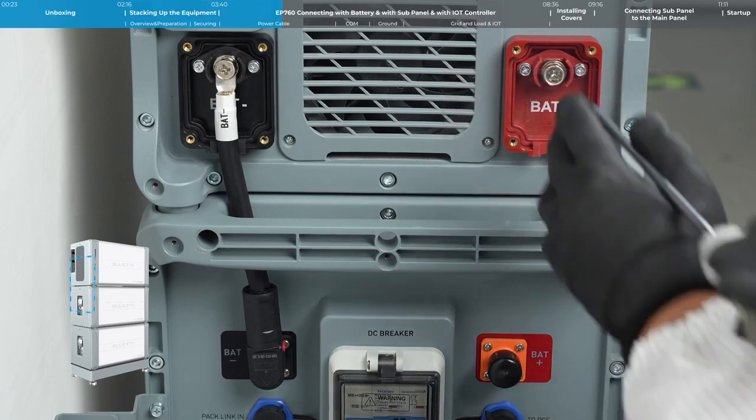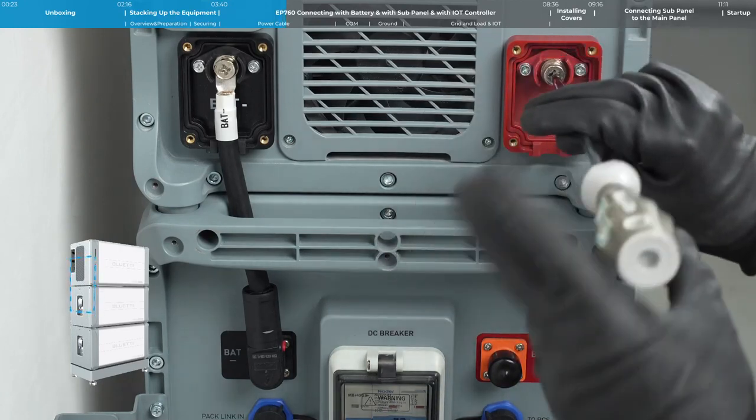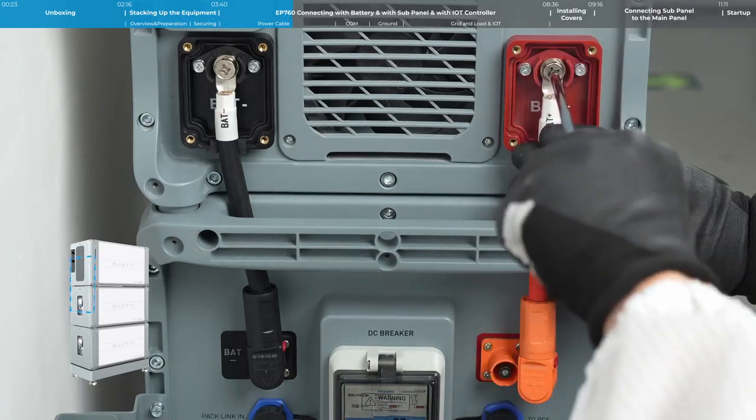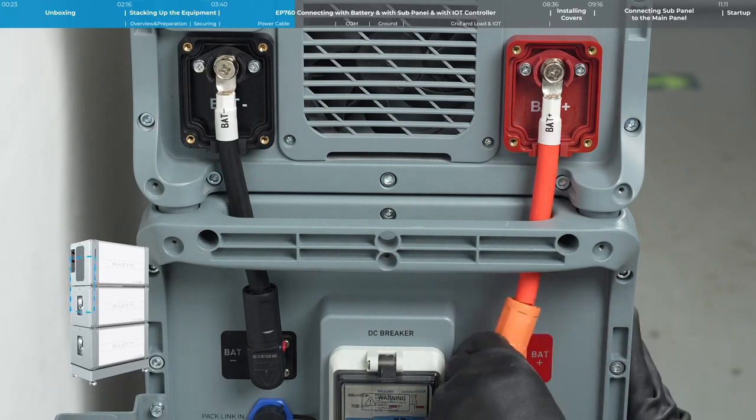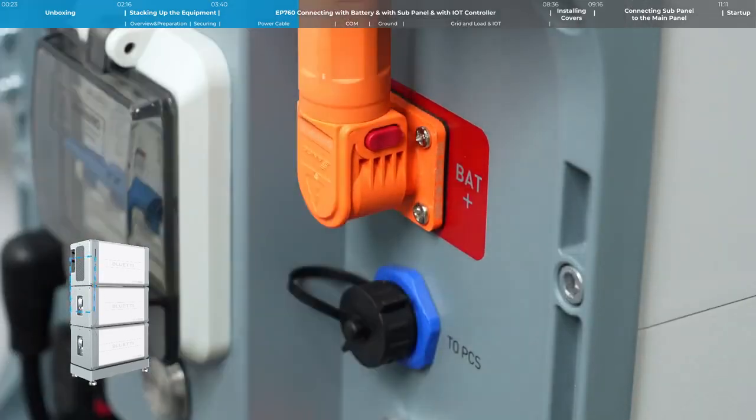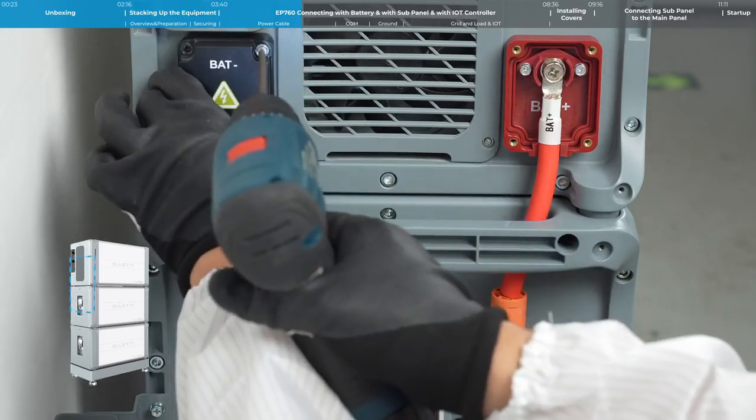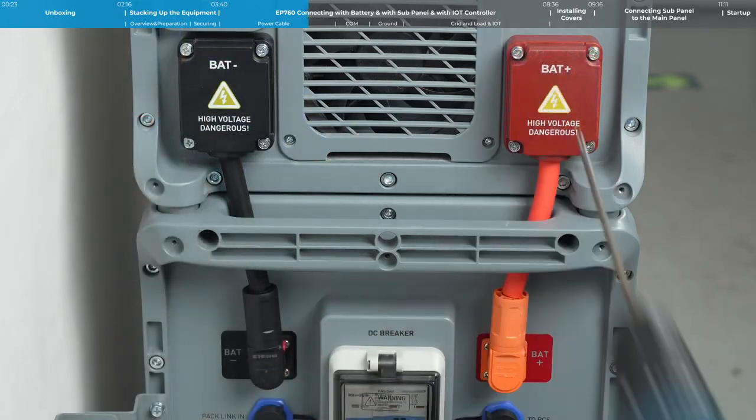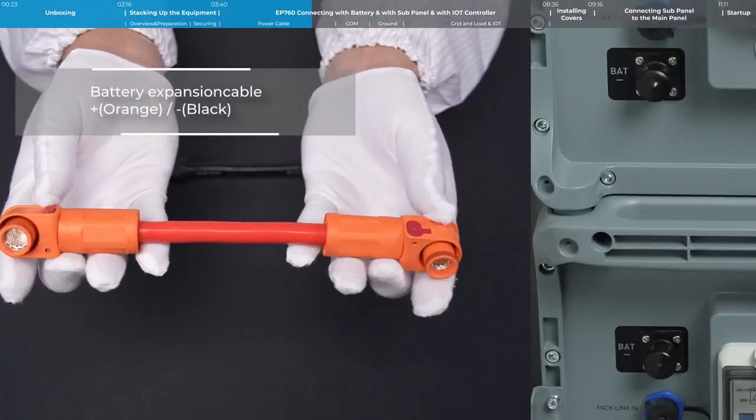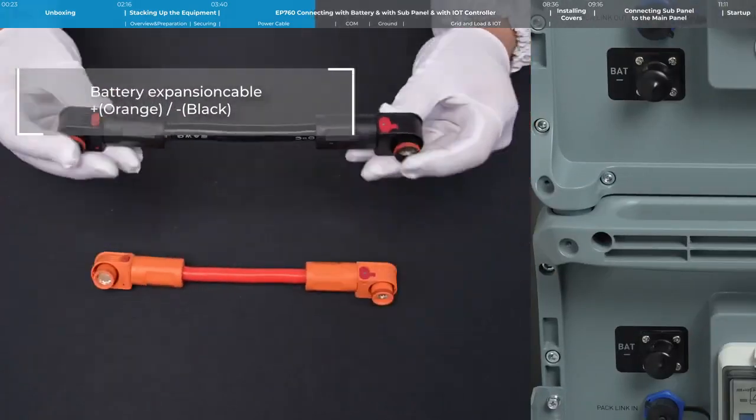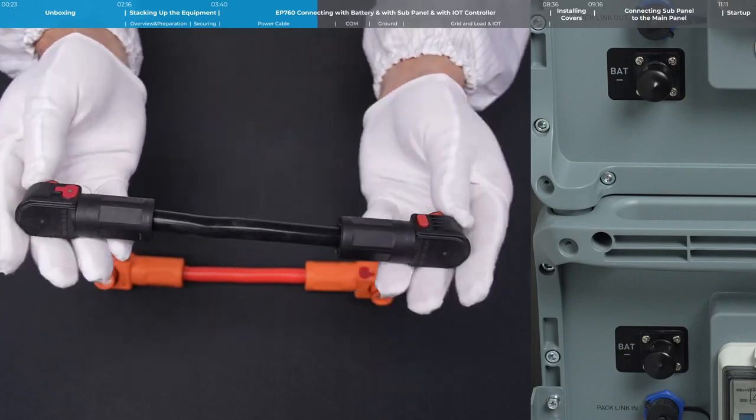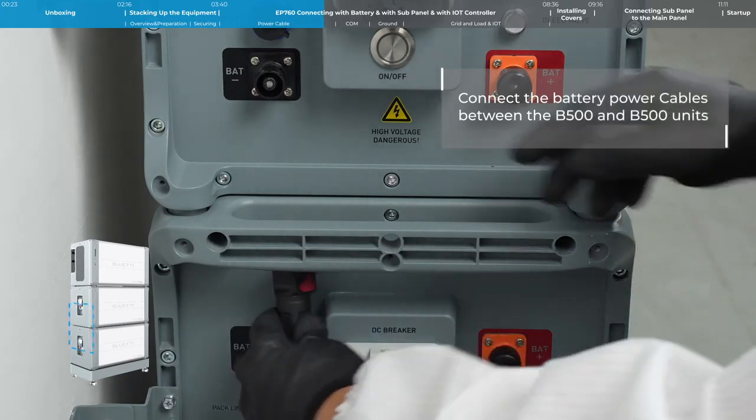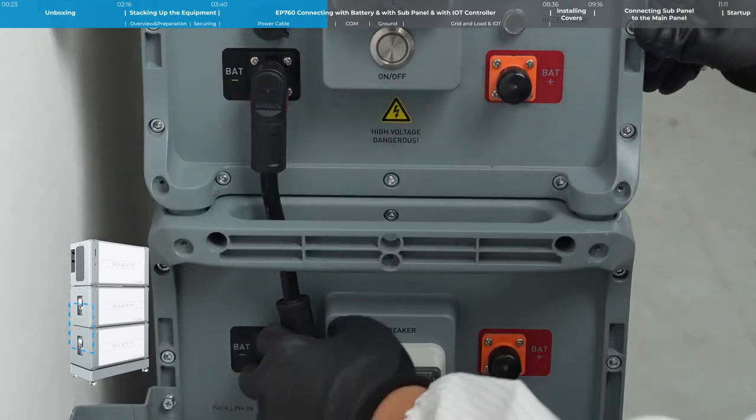Connect the battery power cables between the EP760 and B500 units. You'll hear a click when the connection is properly secured. Once connected, put those protective covers back on. For the battery expansion cables connecting B500 units, both ends of the cable have a quick release structure. Connect the battery expansion cables between the B500 units. You'll hear a click when the connection is properly secured.